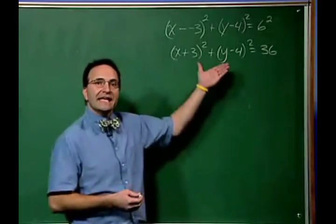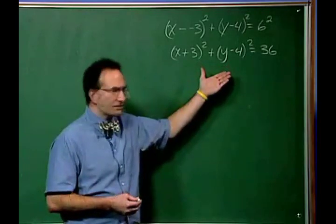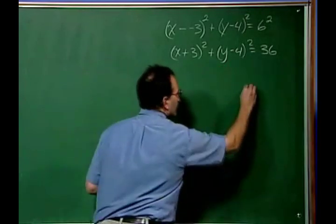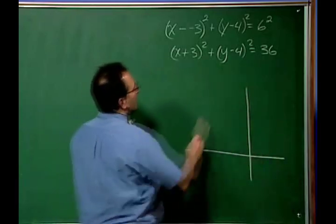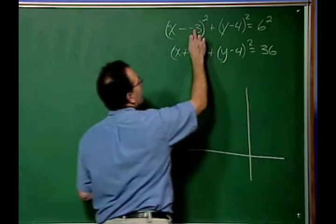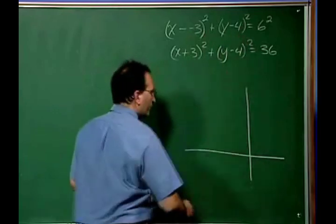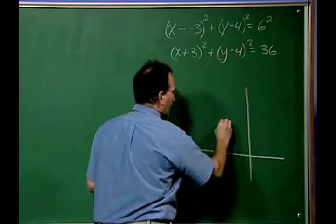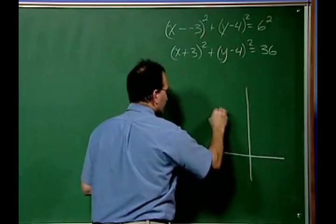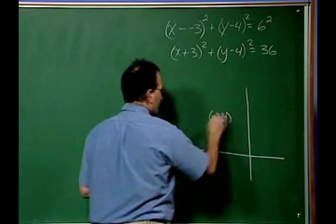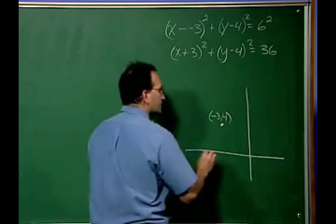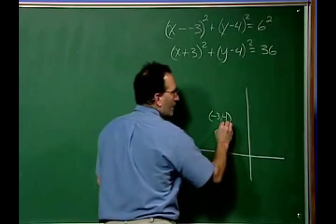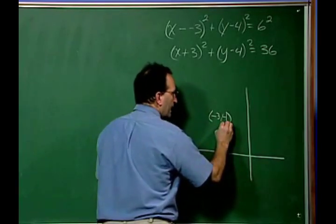All right, so let's take and graph this by hand. So my set of axes I'm going to draw here. And I know that the center is (-3, 4). So (-3, 4) is approximately right here. And I know that the radius is six. So let's take and graph a few points with radius of six.